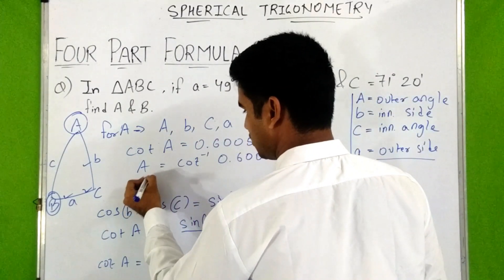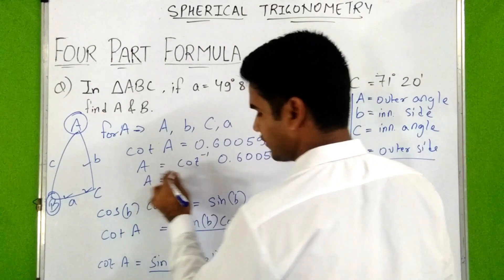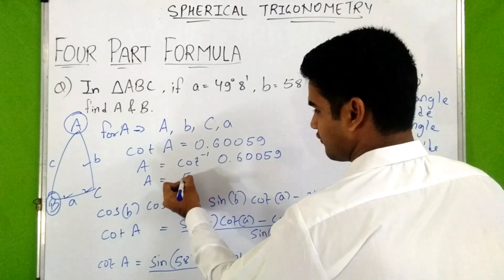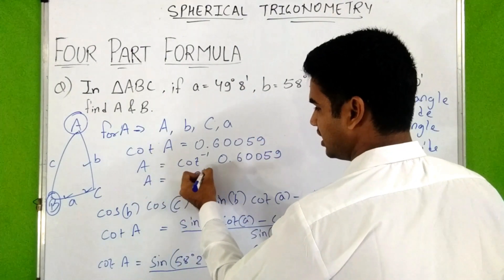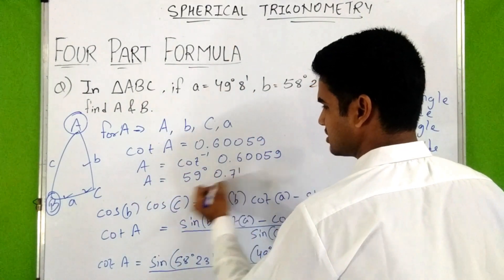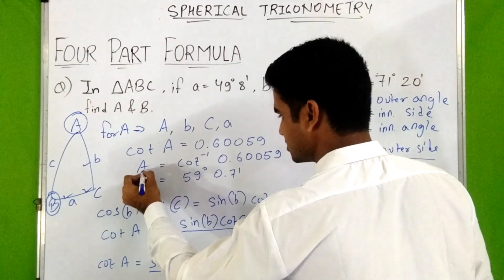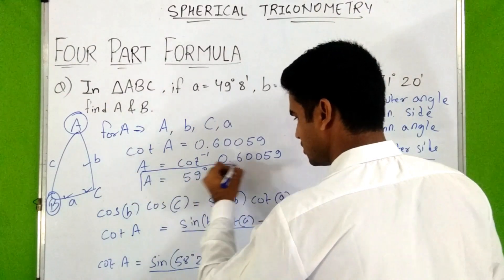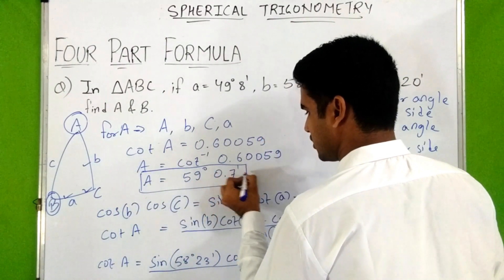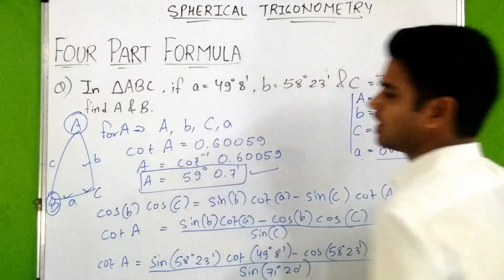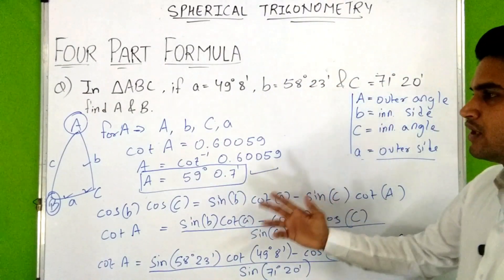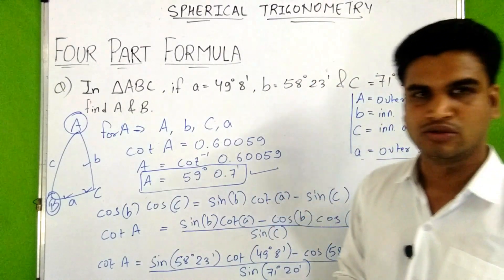From the calculator, the value of cot(A) gives A = 59°0.7'. This is how you calculate the value of capital A using the four part formula.